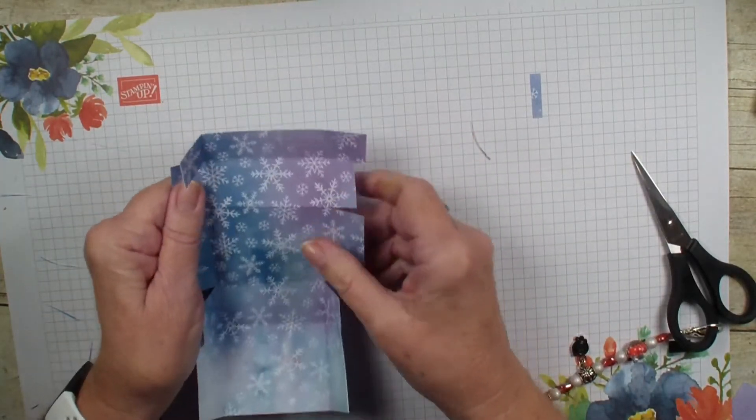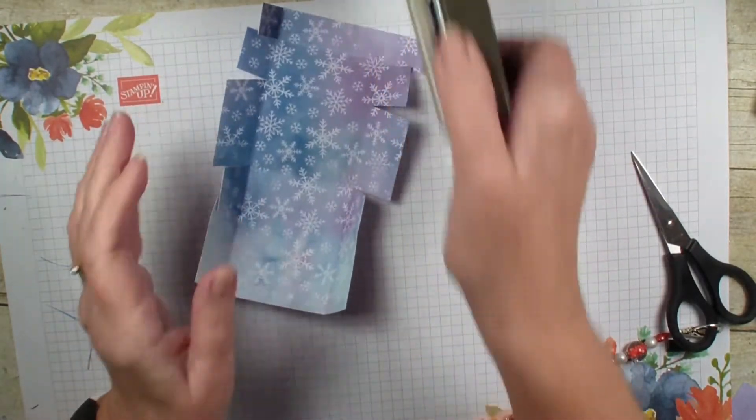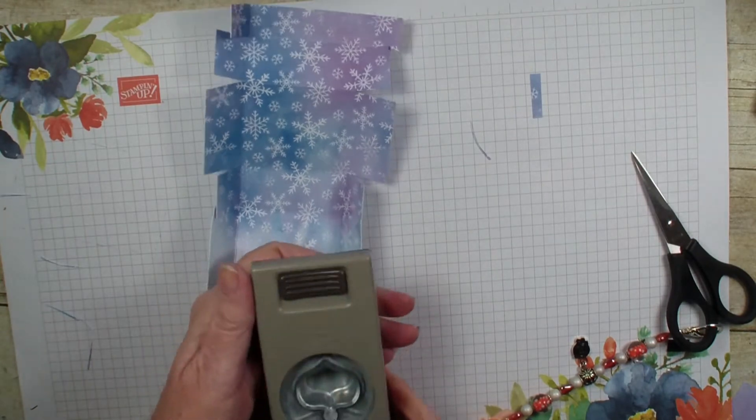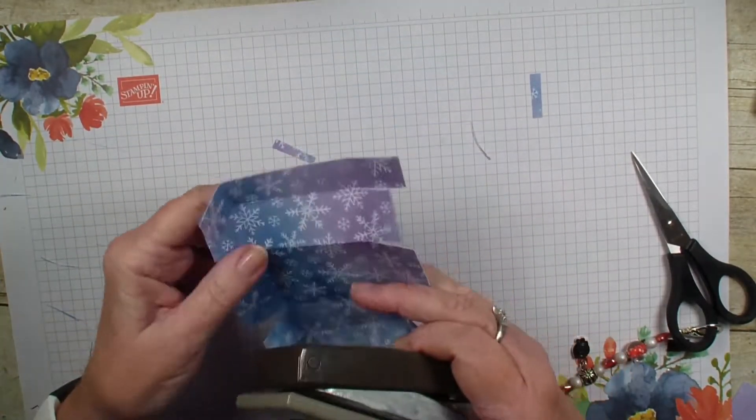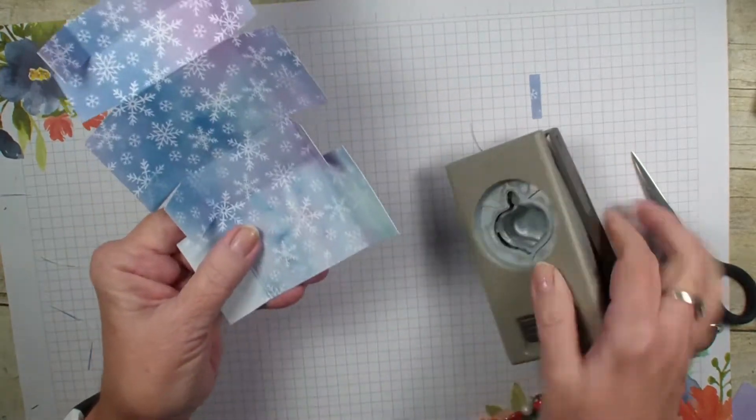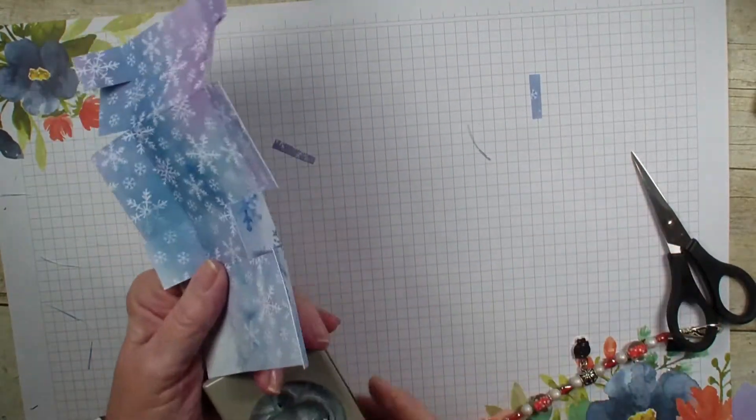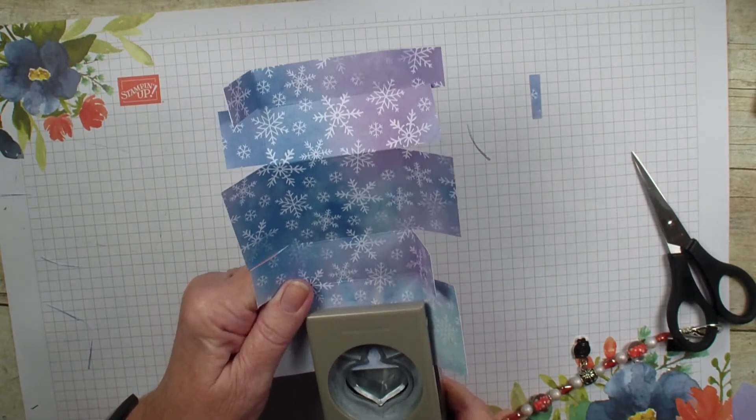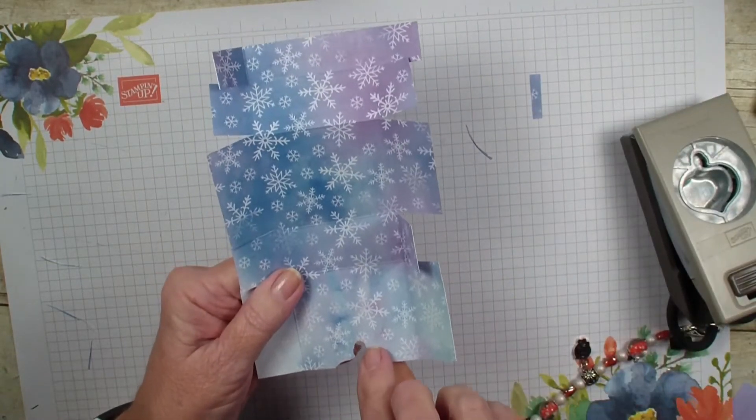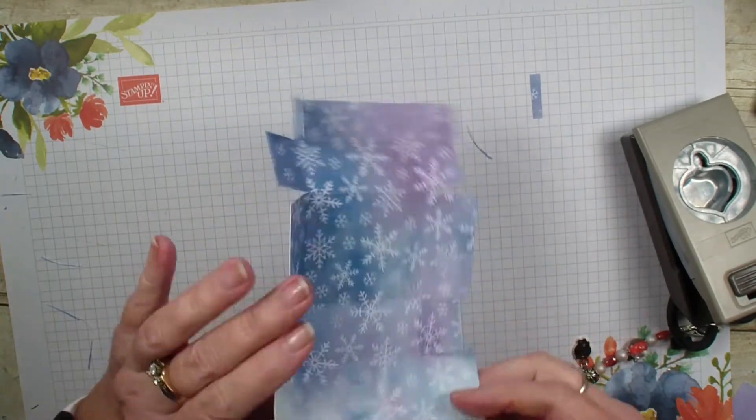What I'm going to do next is grab my ornament punch. I want to have a little opening to put my thumb in to open my box. I'm just using the top of that ornament punch to do that.